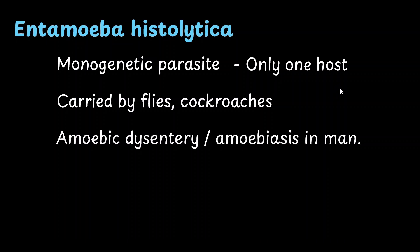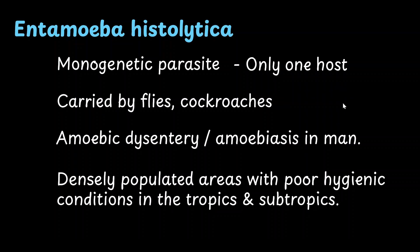Entamoeba is usually seen in the tropics and subtropical regions and is prevalent in densely populated areas where hygiene conditions are poor. Entamoeba has three structures.